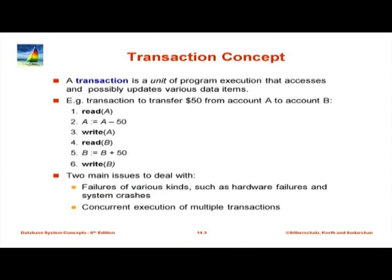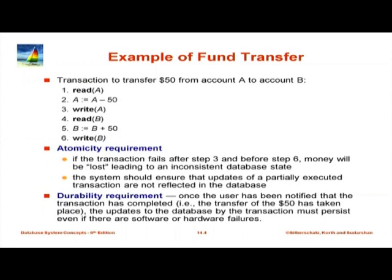Another issue is concurrent execution of multiple transactions. With respect to the bank transfer example, atomicity means that if a transaction starts and fails in between, the system should clean up such that it appears as if the whole transaction executed or nothing happened at all — the transaction should appear to be atomic. To achieve this, you have to undo partially reflected effects.